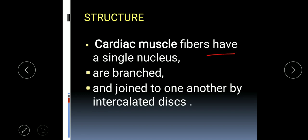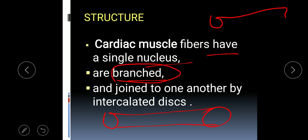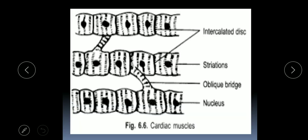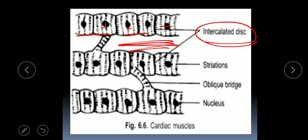Cardiac muscle fibers have a single nucleus and the cells are branched — unlike striated muscles which are long cylindrical tube-like structures, cardiac muscle cells are branched. They are joined to one another by intercalated discs, which fill the space between branches. The branched areas are connected by oblique bridges. So cardiac muscle has thin striations, uninucleated branched cells, intercalated discs, and oblique bridges.